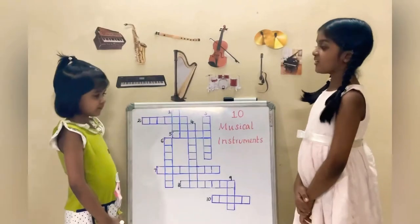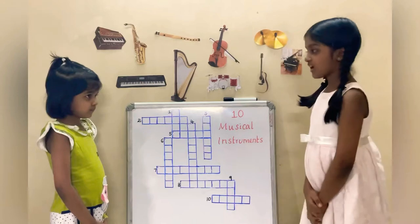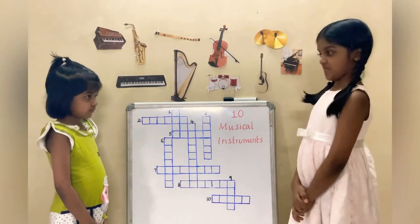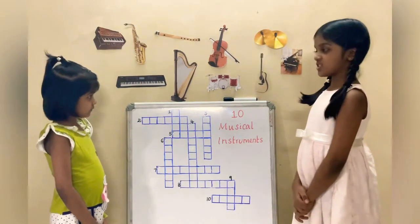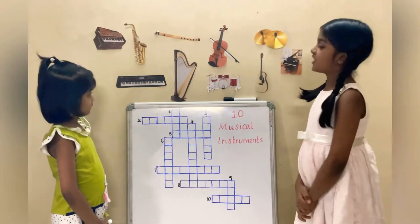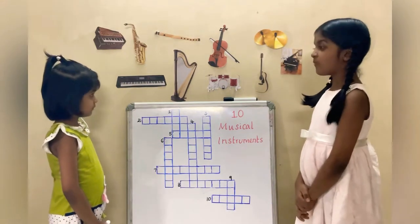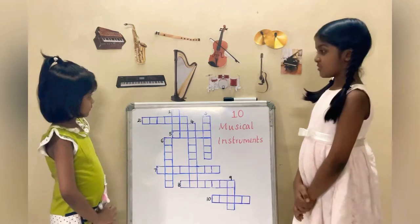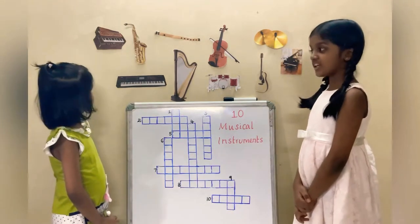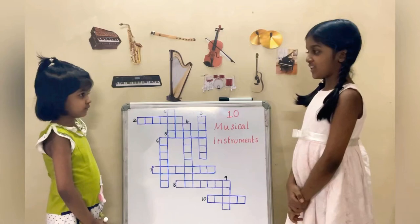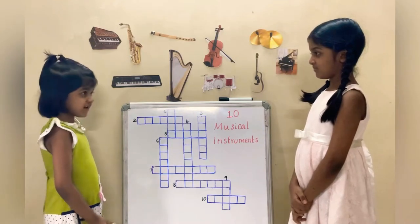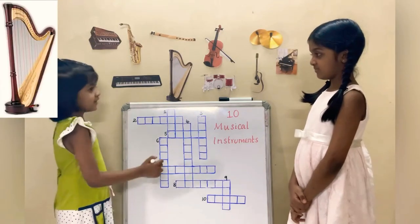I am going to give you the first clue. This is a string instrument. The shape of the instrument is triangular and it is made of wood. It produces sound by the vibration of stretched strings. Can you find that instrument? Yes, it is harp.